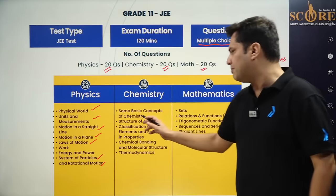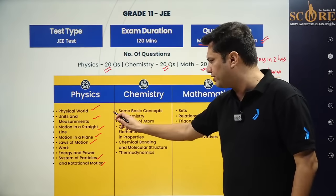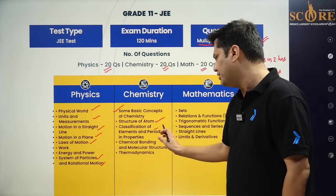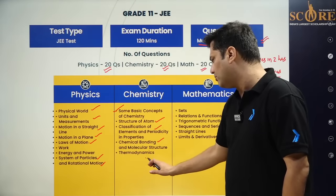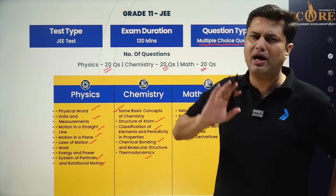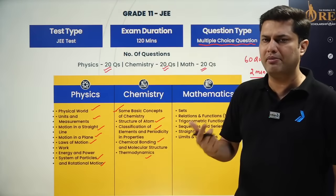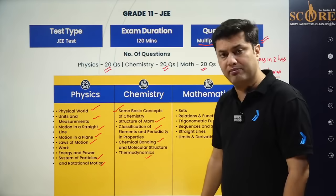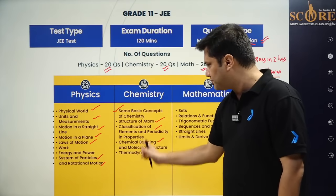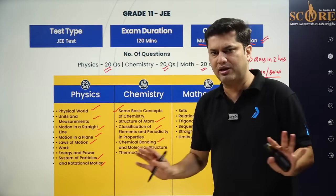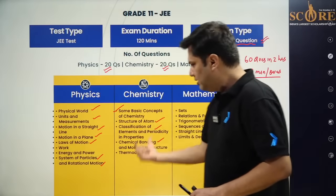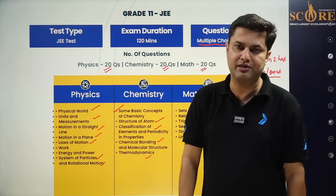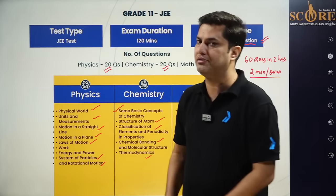For chemistry, the syllabus includes: Some Basic Concepts of Chemistry, Structure of Atom, Periodicity, Chemical Bonding, and Thermodynamics. There is no equilibrium, no organic, and limited inorganic — only chemical bonding and the periodic table. The chemistry syllabus is doable, though physics with rotational motion and system of particles is definitely the toughest part. We'll be preparing alongside you and teaching these topics.